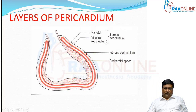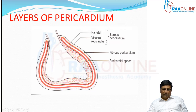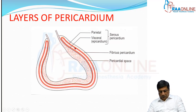The tough outer layer is called the fibrous pericardium. Then there are two layers of the serous pericardium: the outer layer is called the parietal serous pericardium and the inner layer is the visceral serous pericardium. A potential space exists between the visceral pericardium and the parietal pericardium, which houses 50 ml of fluid that helps with lubrication of the heart.